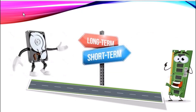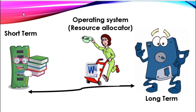Like human beings, computers also have short-term memory for temporary activities and long-term memory for permanent activities. When you run an application software such as Microsoft Office Word, the operating system as a resource allocator will do its allocation job. It will allocate a portion of the short-term memory to the Microsoft Office Word application software, which will then be loaded from the long-term memory such as the hard drive and placed on the allocated portion in the short-term memory space.